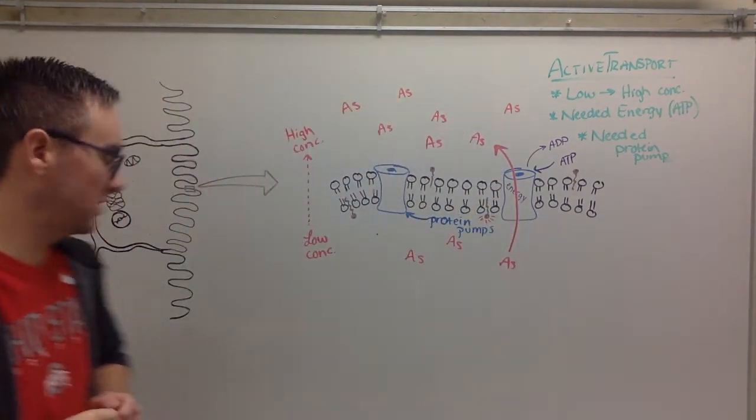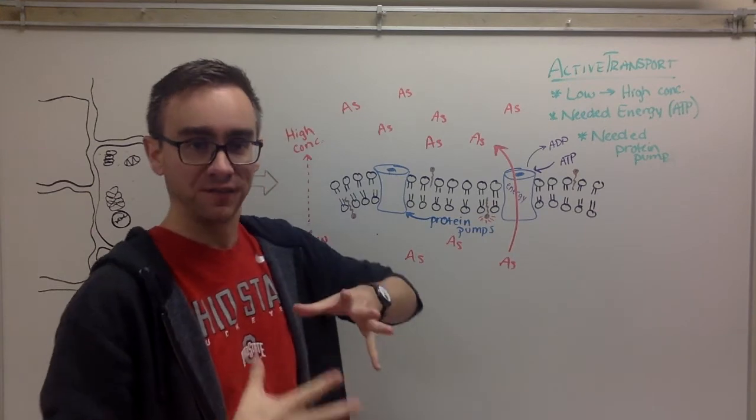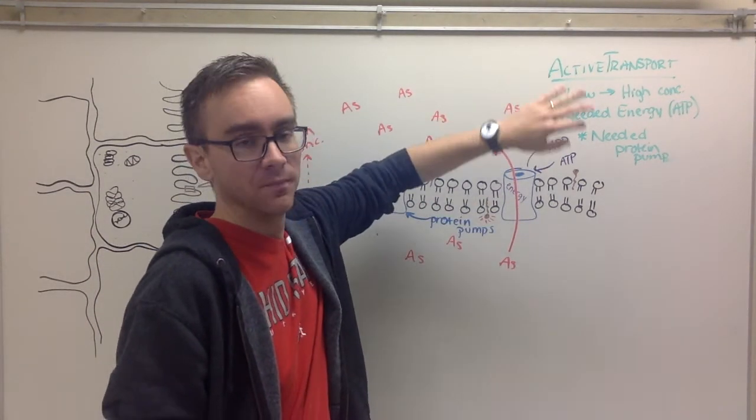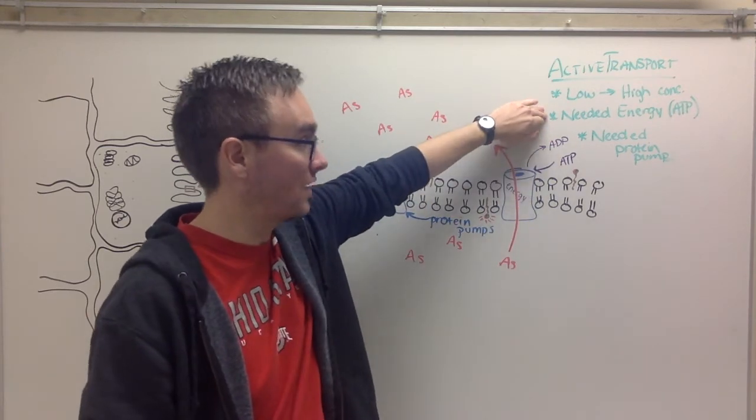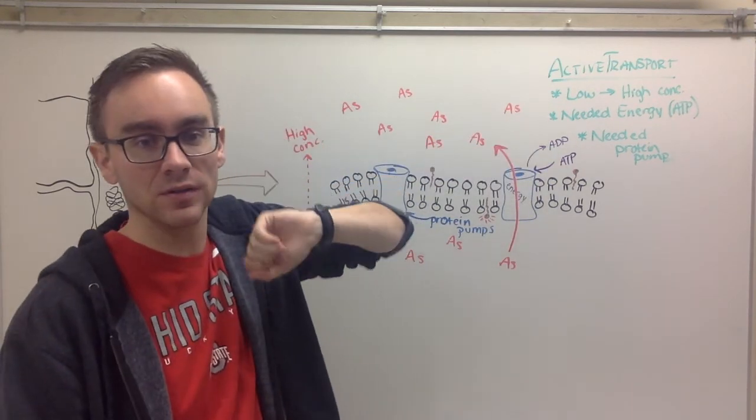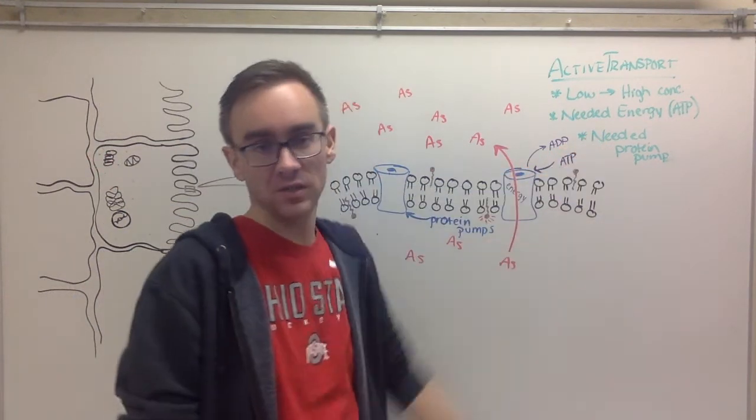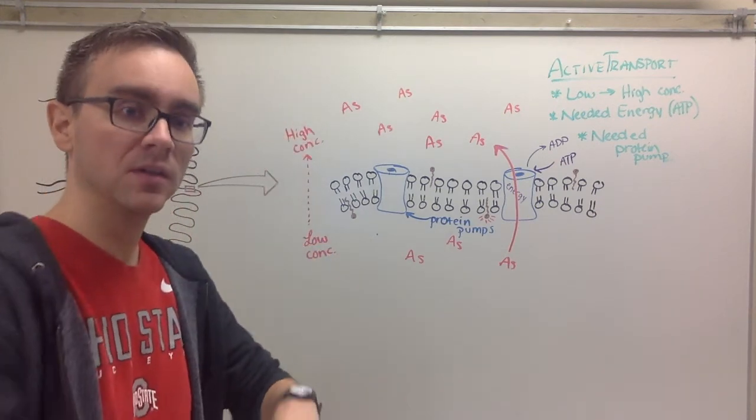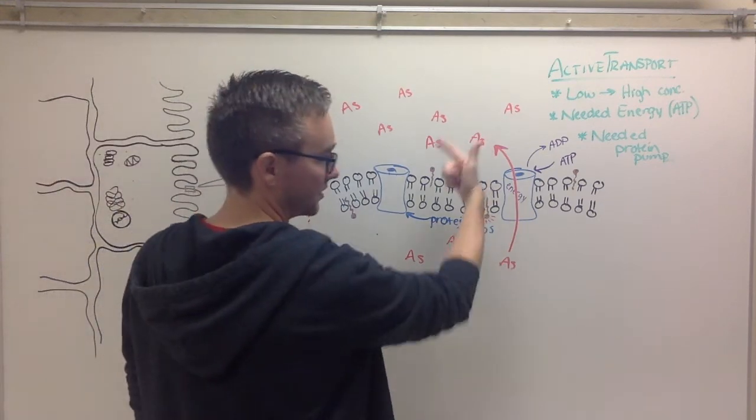So it works in the opposite way of passive transport diffusion in the fact that instead of high to low, it goes low to high. Diffusion is no outside energy. This requires outside energy, although it is very similar to facilitated diffusion in the fact that it needs an embedded protein to do this. This is a specific type of protein called a protein pump that kind of forces it to go in the opposite direction.